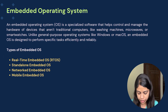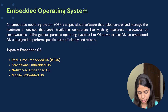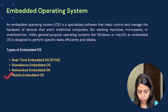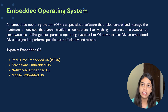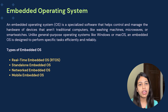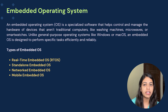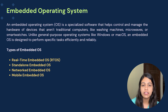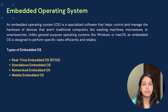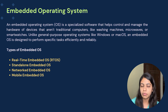The types of embedded operating system are: real-time embedded operating system, standalone embedded operating system, networked embedded operating system, and mobile embedded operating system. Embedded operating systems are used whenever we want to perform specific tasks where traditional computers are not being used — such as in cars and washing machines.